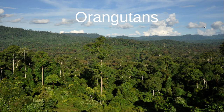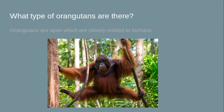Hey guys, it's Worldwide Animals here, welcome back to another video. Today's video is about orangutans. Orangutans are apes which are closely related to humans, and you can kind of see that because if you look at an orangutan it kind of just looks like a human, just furry, and its head looks different.